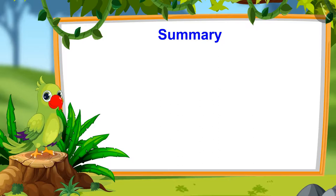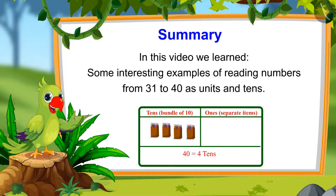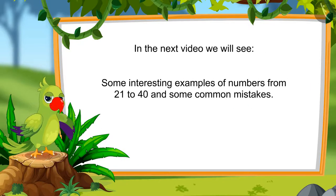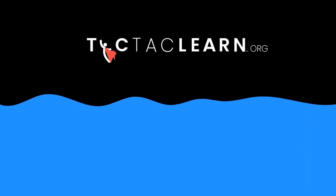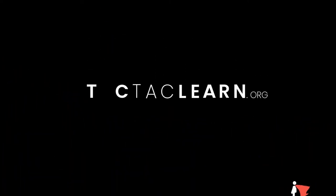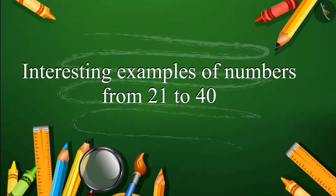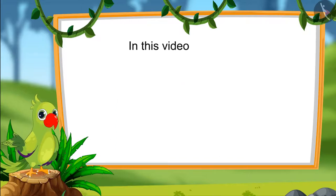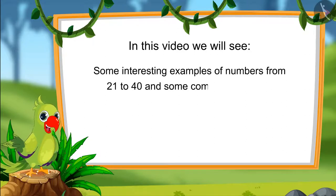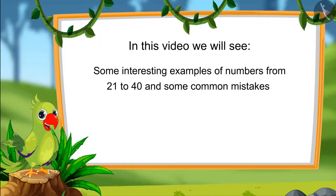So, children, that was all for today. In this video, we saw numbers from 21 to 40 and some interesting examples of reading those numbers as units and tenths. In the next video, we will see some interesting examples of numbers from 21 to 40 and learn about some common mistakes which should not be done. Till then, goodbye friends.